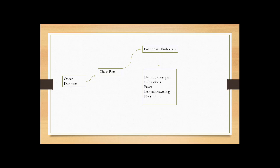These patients typically also have leg pain or swelling of the leg, and it's usually unilateral. If you're suspecting PE because of typical pleuritic chest pain with shortness of breath of acute duration, you should ask about leg pain and swelling. The patient may look at you with surprise, asking why you're looking at their leg when they're talking about chest pain and shortness of breath.